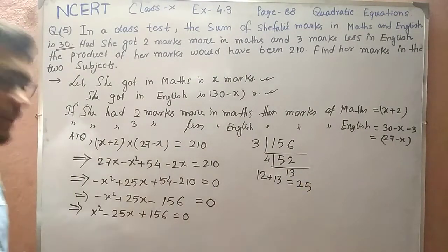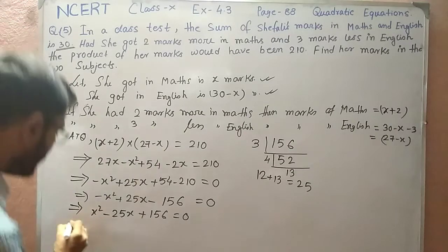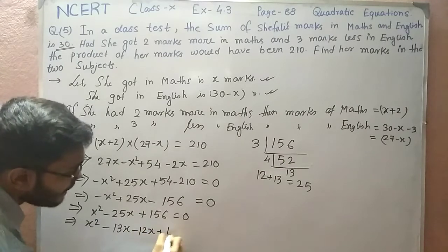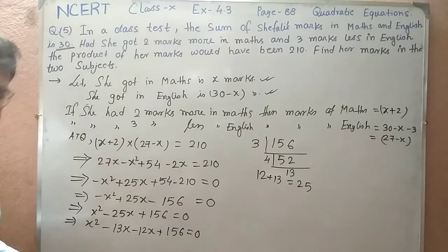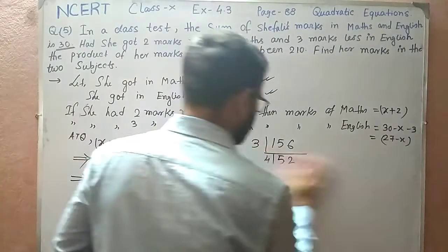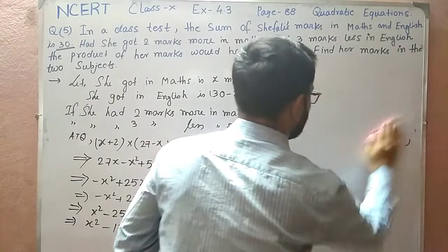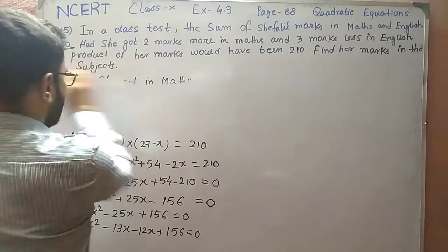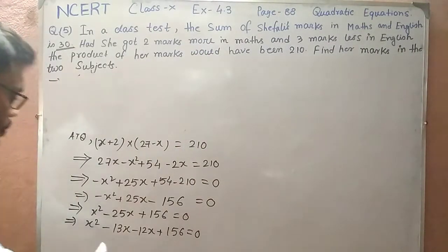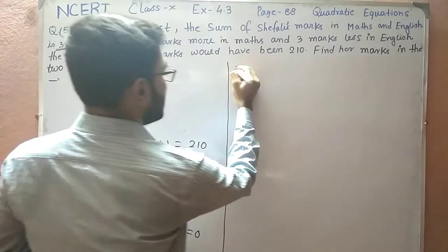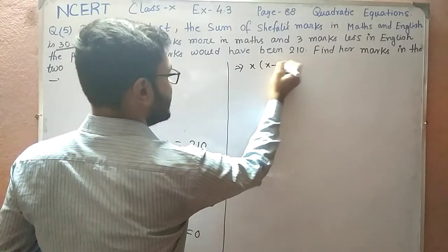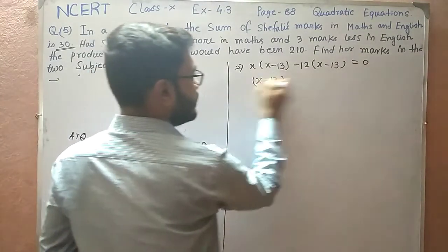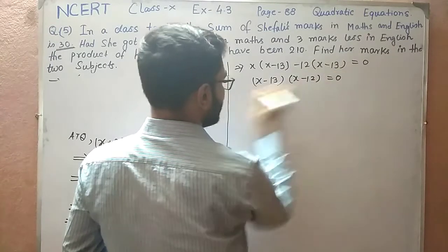So the equation becomes x squared minus 13x minus 12x plus 156 equals 0. Taking x common from the first two terms: x(x minus 13), and minus 12 common from the last two terms: minus 12(x minus 13) equals 0. So (x minus 13)(x minus 12) equals 0.